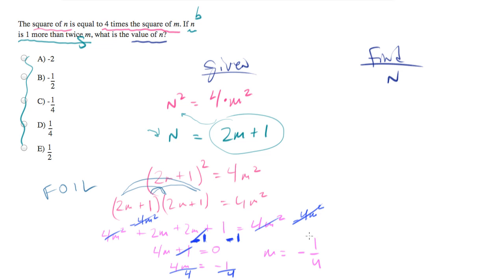So let's plug this negative 1 quarter back into the equation that we have for n. n is equal to 2 times negative 1 quarter plus 1 which equals negative 2 over 4 plus 1 which equals negative 1 half plus 1 which equals 1 half. That was close. The answer is actually E, 1 half.